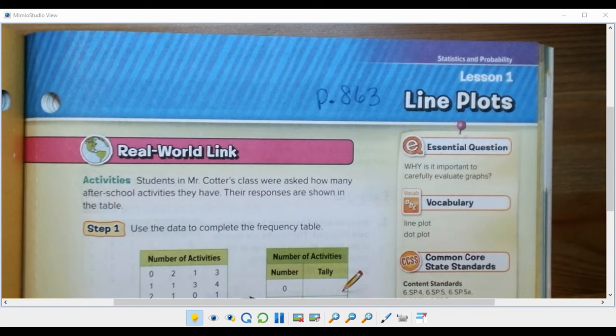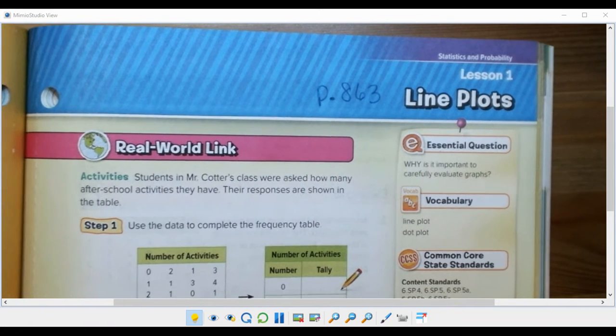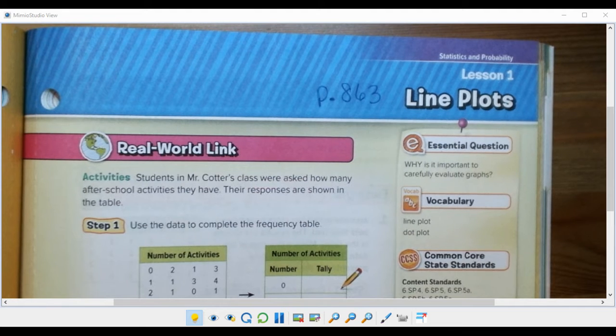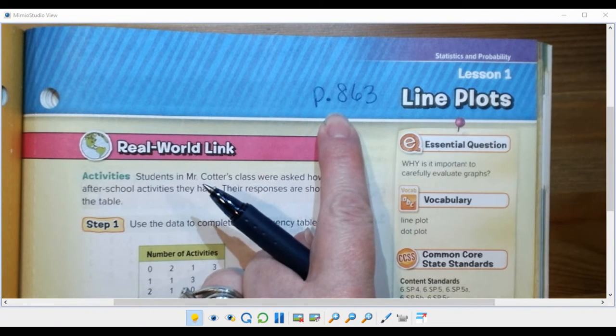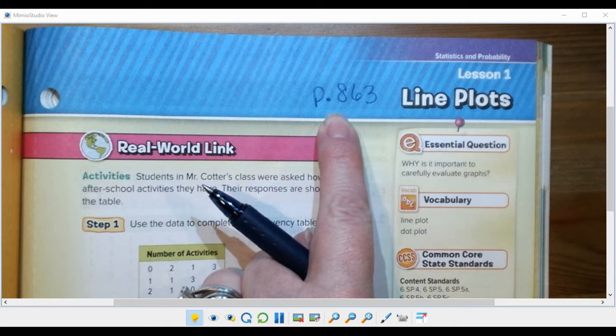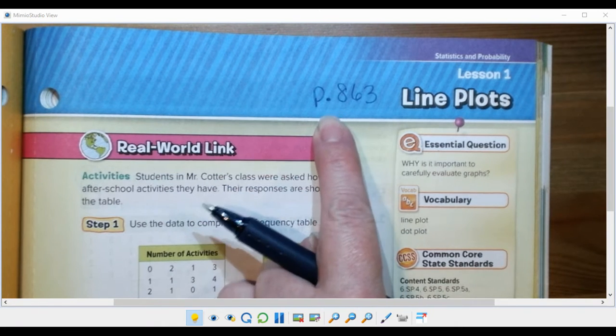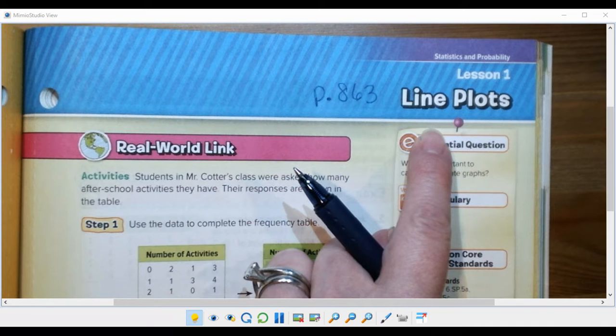Today we're going to jump ahead to chapter 12 and start talking about some different types of graphs. If you want to follow along in your textbook I'm starting on page 863 but you could certainly just watch the video without it. Today we're going to talk about line plots, not line graphs, that's something different, but line plots.